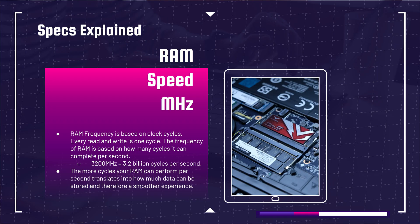Let's move forward into RAM speed or RAM frequency. RAM frequency is based on clock cycles — every read and write is one cycle. The frequency of RAM is based on how many cycles it can complete per second. So 3200 MHz equals 3.2 billion cycles per second. The more cycles your RAM can perform per second translates into how much data can be stored and therefore a smoother experience.